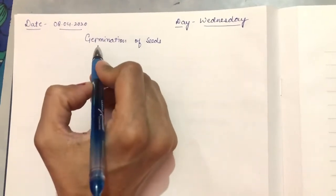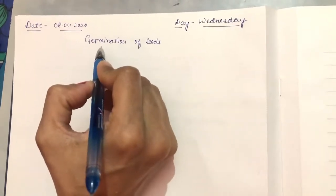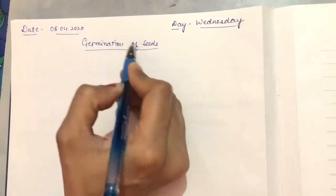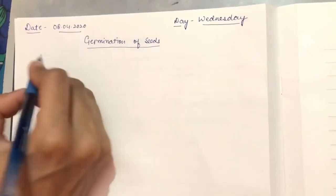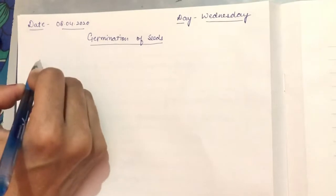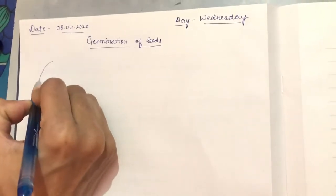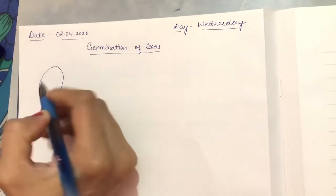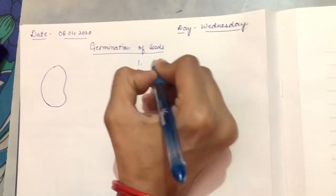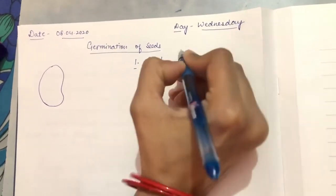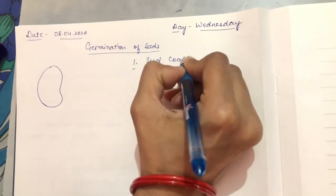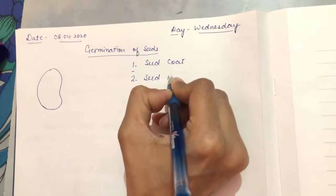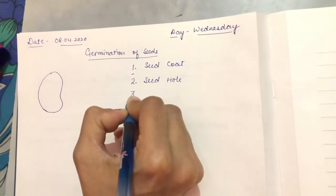Good morning, my dear students. Today we will discuss germination of seeds. Before starting our topic, let's take a quick review of our previous topic. Yesterday I had told you that a seed consists of mainly four parts.